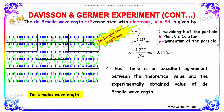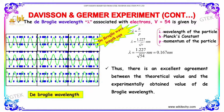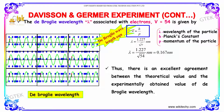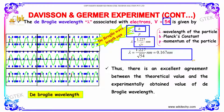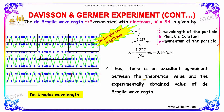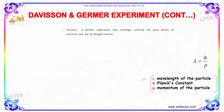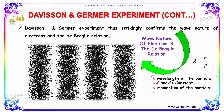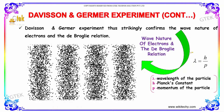The de Broglie wavelength lambda associated with the electron accelerated through 54 volts is given by lambda equals h by p, where h is Planck's constant and p is the momentum of the particle. Substituting the values gives 1.227 divided by root V nanometers, and replacing V with 54 gives lambda equal to 0.167 nanometers. There is excellent agreement between the theoretical value and the experimentally obtained value of the de Broglie wavelength. The Davison-Germer experiment thus strikingly confirms the wave nature of electrons and the de Broglie relation, lambda equals h by p.